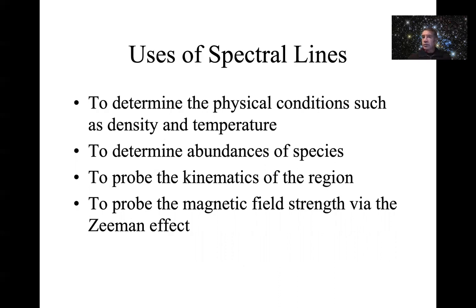When you've encountered spectroscopy before — in the lab, for instance — you might think of it as a way of determining the composition of something: what is it actually made of? Spectral lines are unique; their wavelengths and frequencies are unique to the species emitting them. You can certainly do that with lines in the radio regime as well.